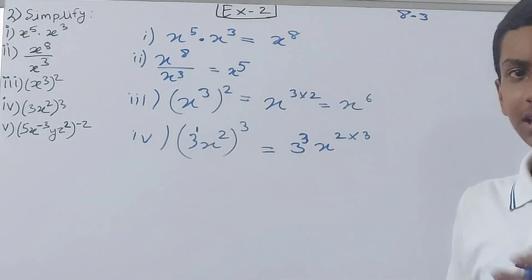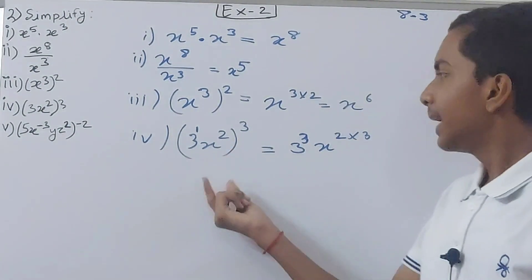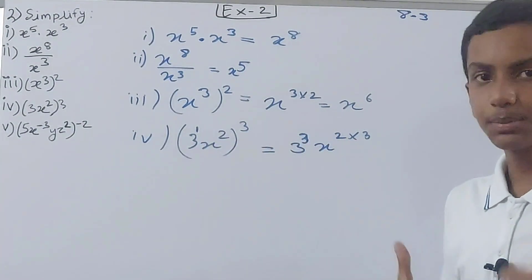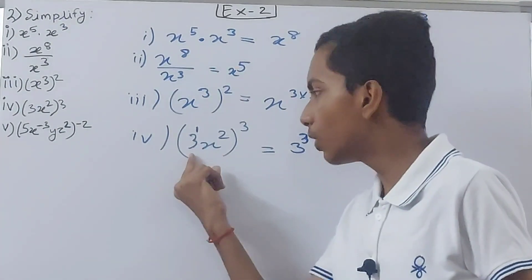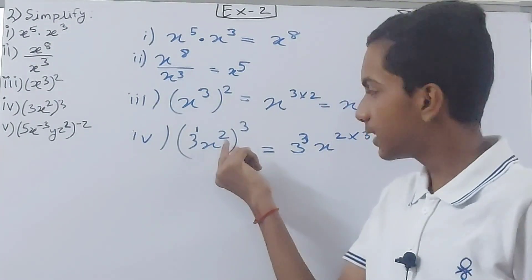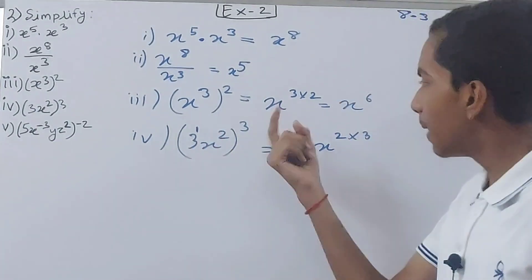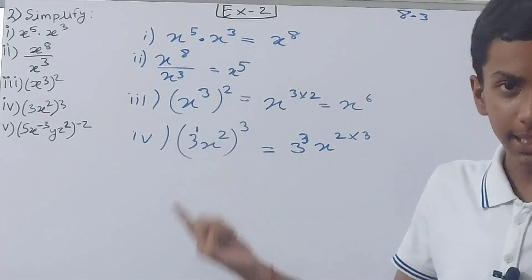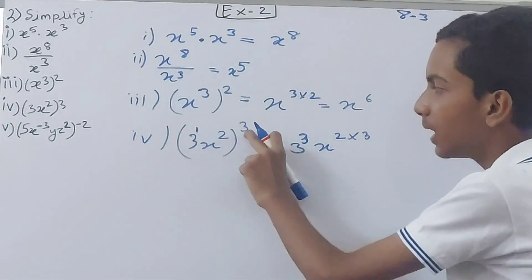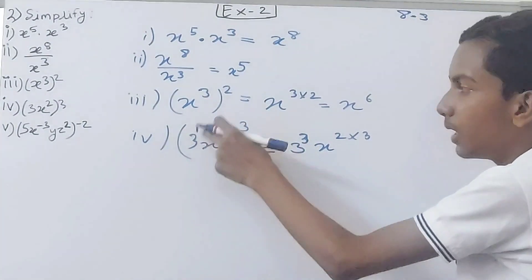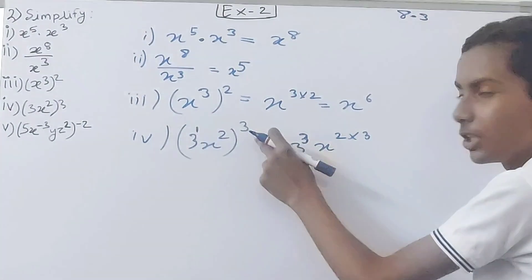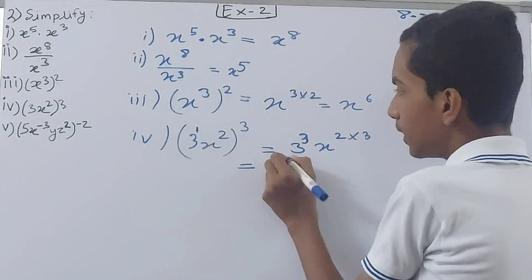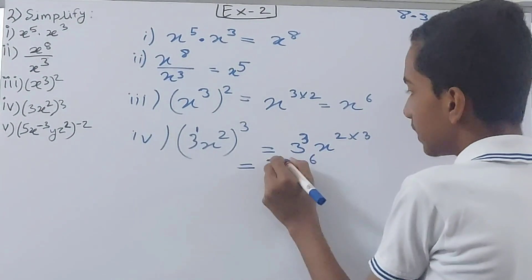Remember: when two different bases — 3 and x — are inside a bracket with an exponent outside, the square inside is only for x, not for 3. But the outer 3 applies to both 3 and x squared. So when we open the bracket, 3 gets exponent 3, and for x we do 2 into 3, giving x to the power 6.